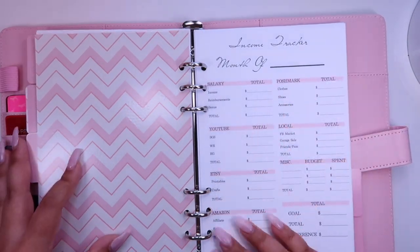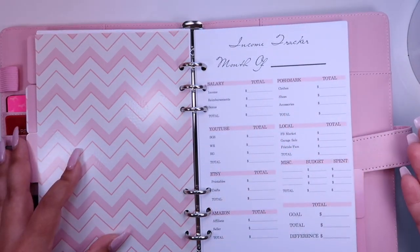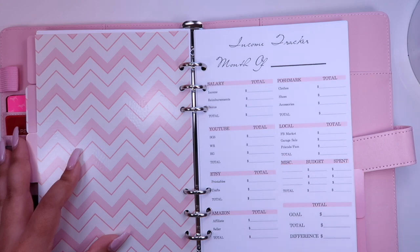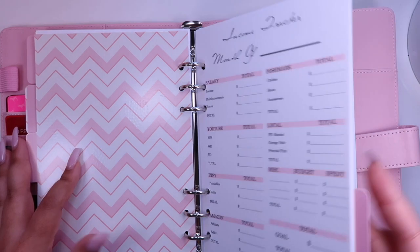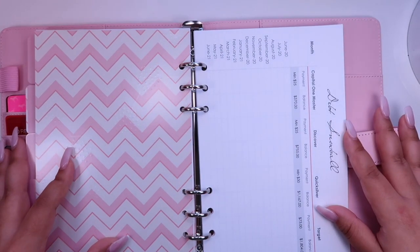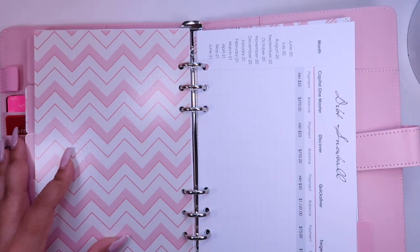And this is my income tracker, and I want to talk about this in another video, because it's a whole story about that as well. And this is my debt snowball. So this one, I actually have it in Excel, but I thought it would be fun to print it out and fill it out each month.